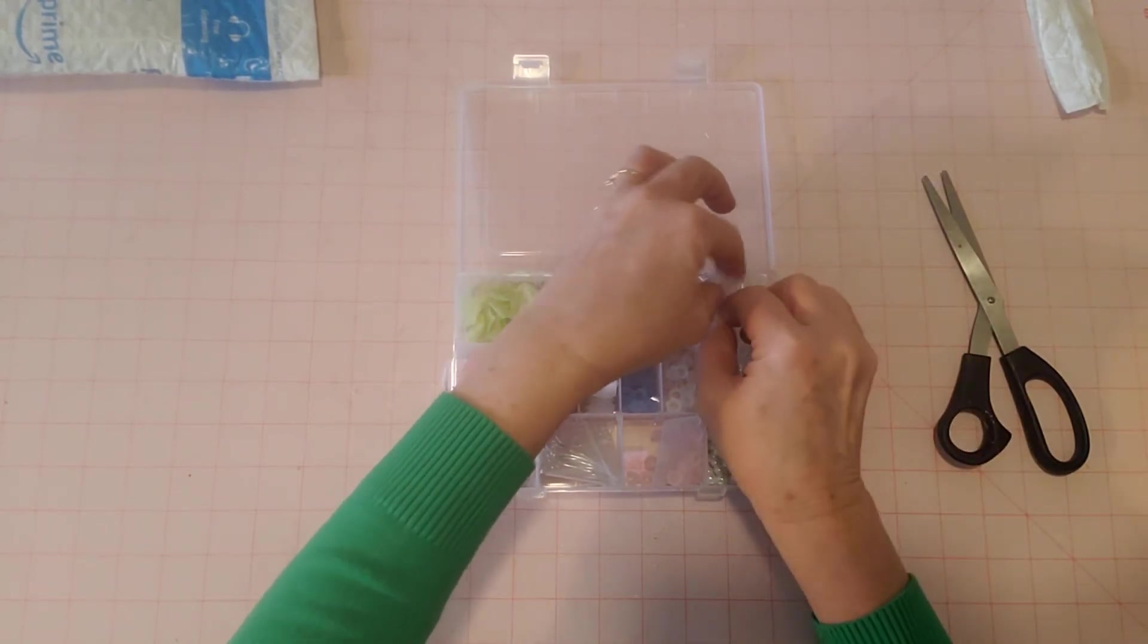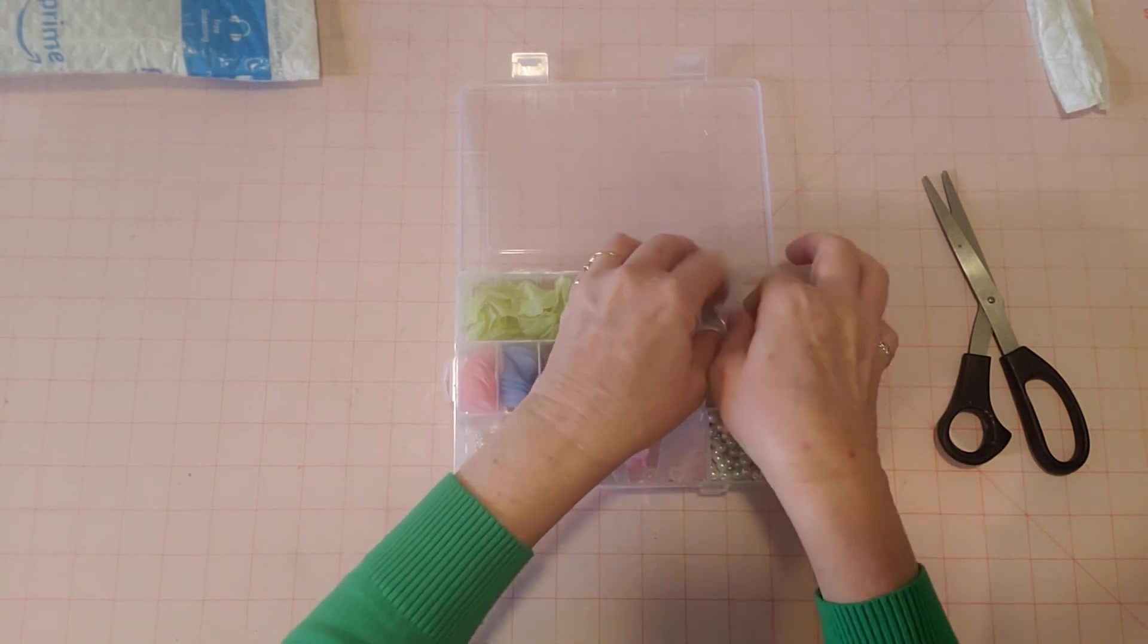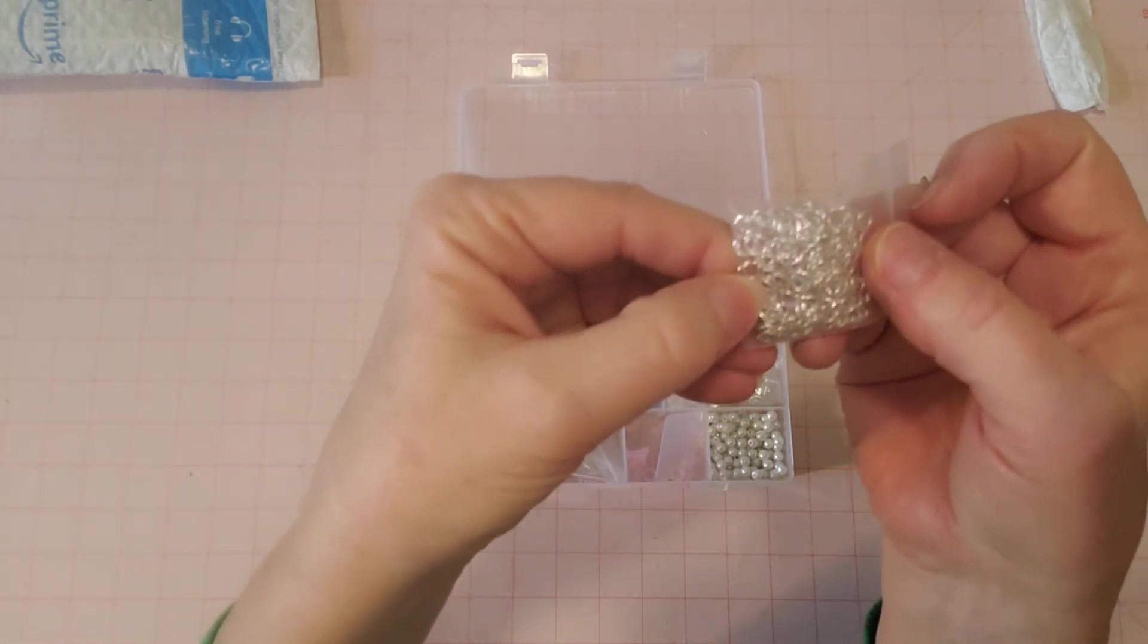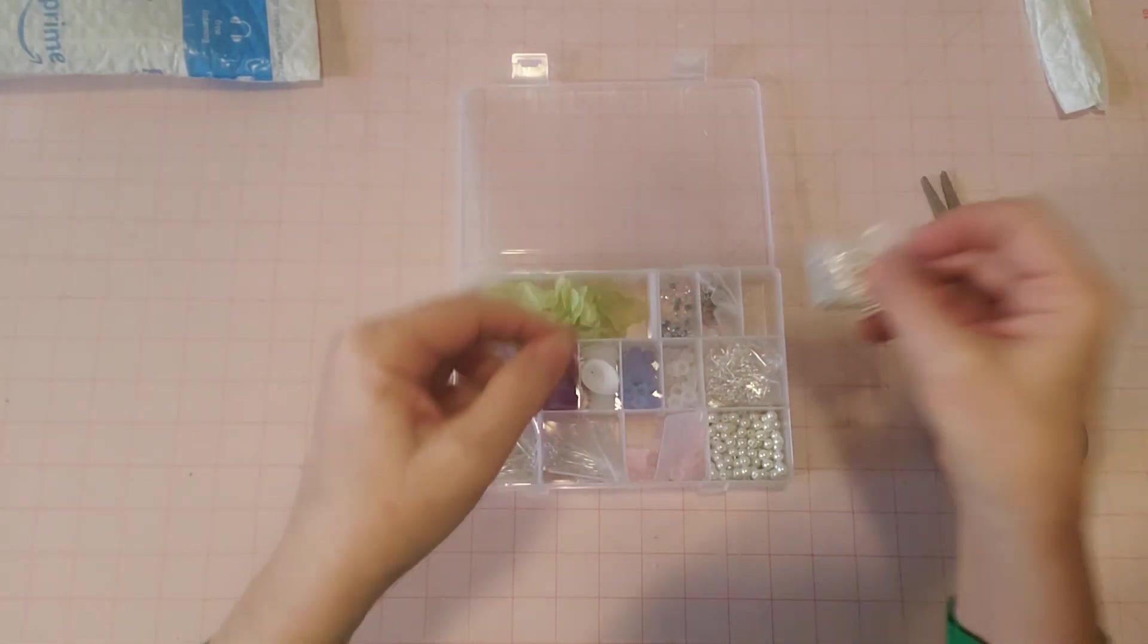There's a compartment here, a compartment here. Let's see what this is. Well, these are little jump rings. There's a bunch in there. So little jump rings, small ones.